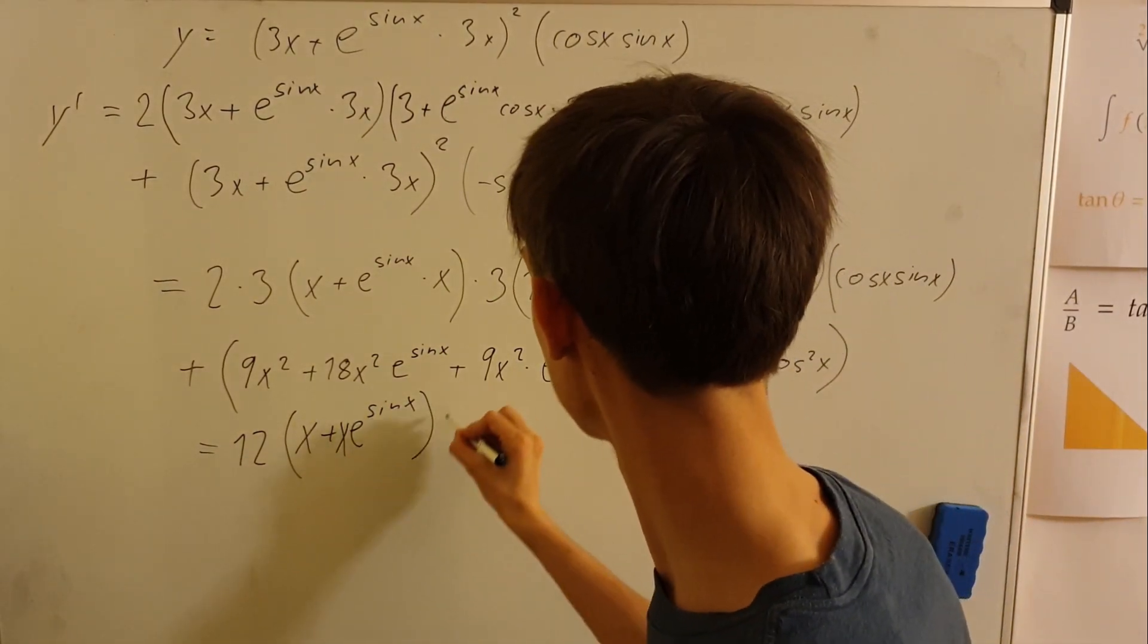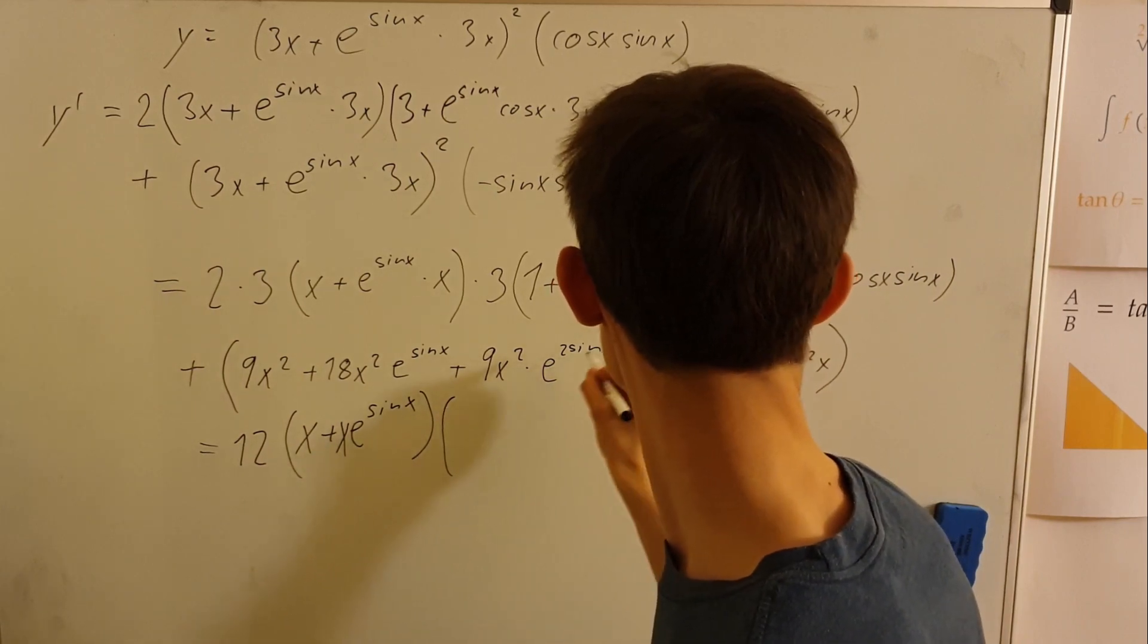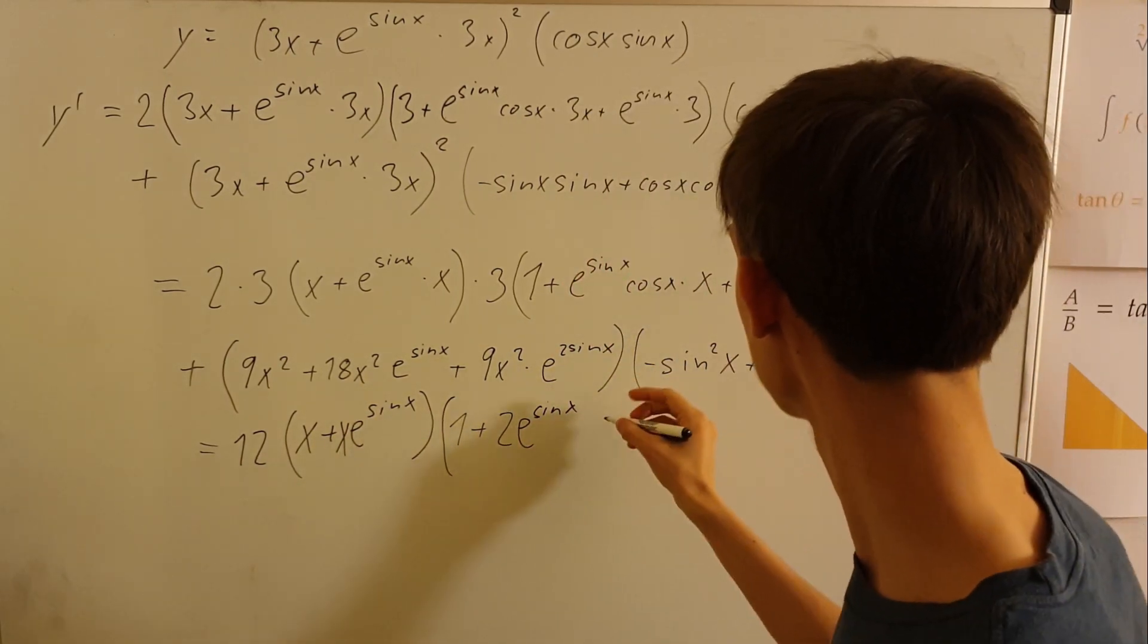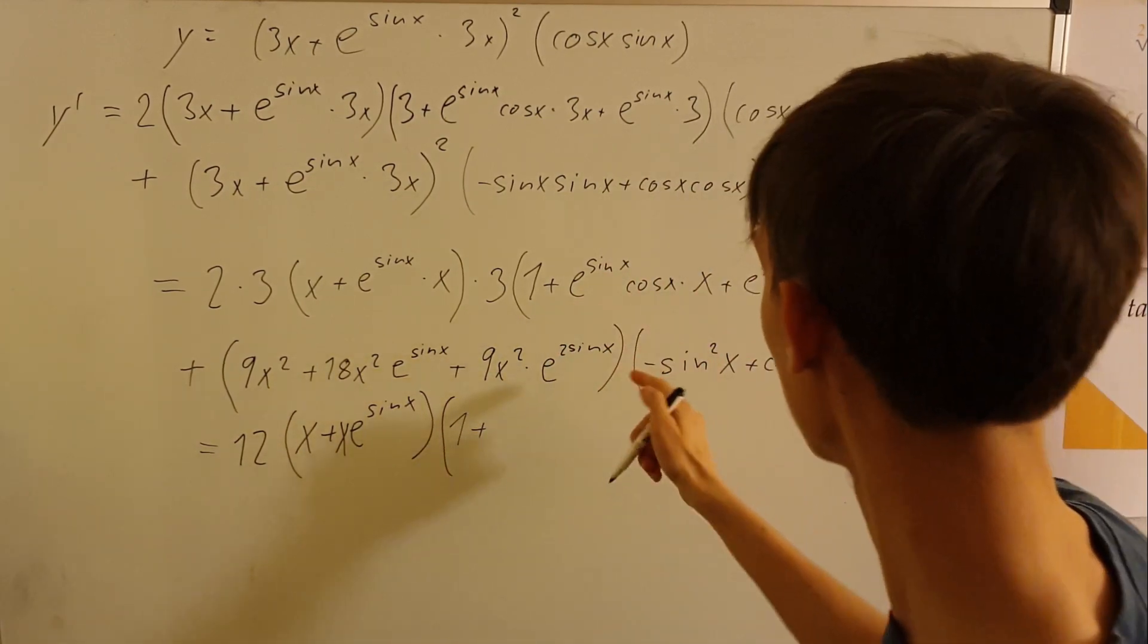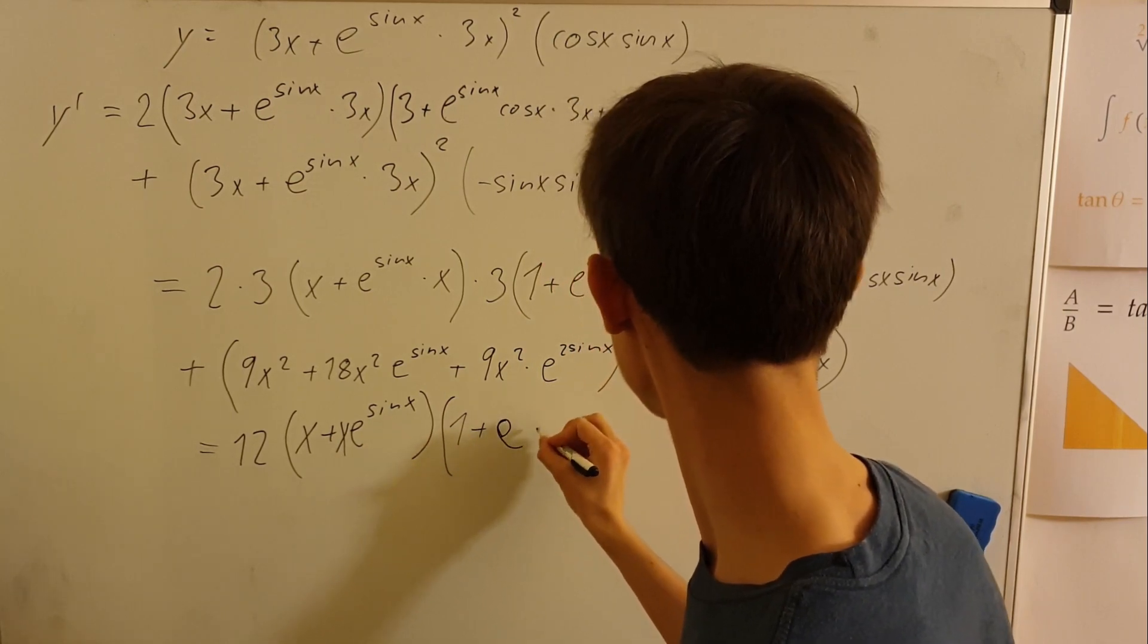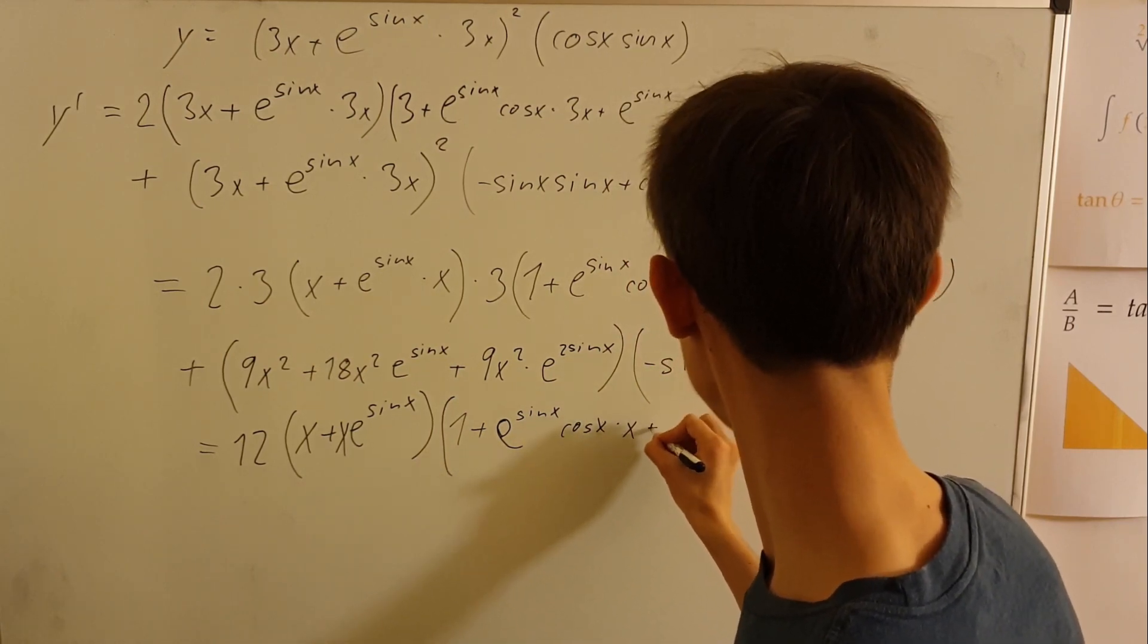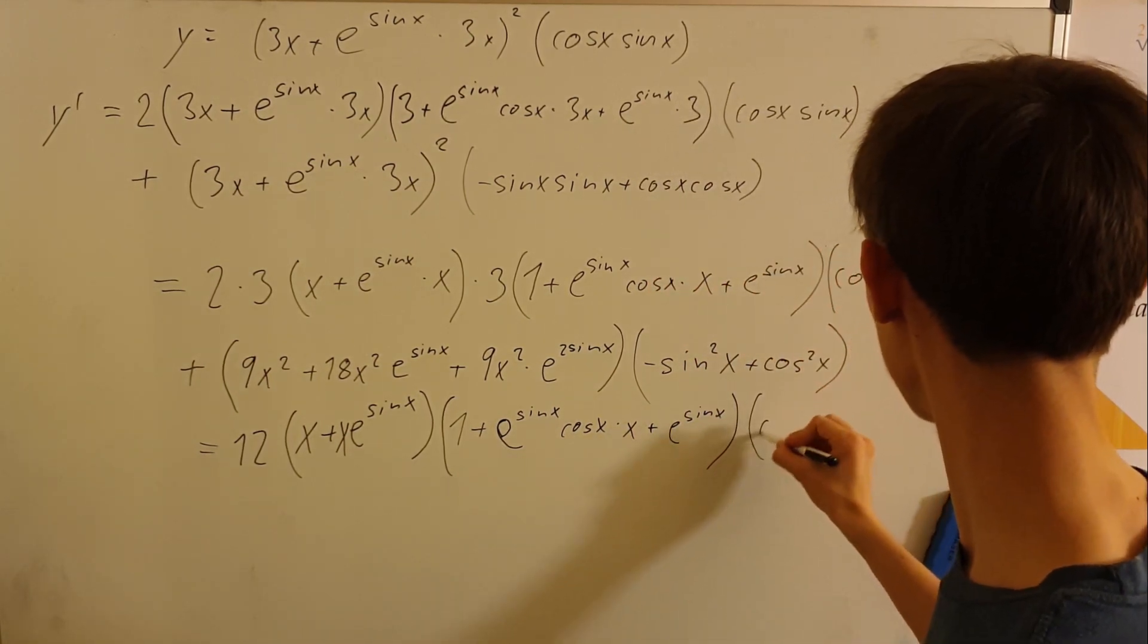We'll put the x here times one plus, oh actually they're not because this is a multiplication so we have one plus just all of this: e to sine x cosine x times x plus e to sine x. And then just rewrite all this stuff.